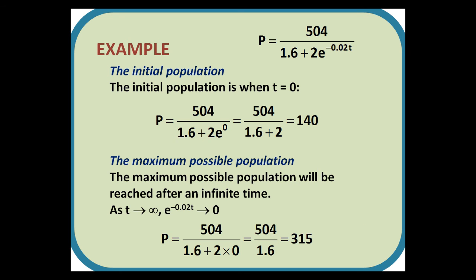The initial population is when t = 0. Substituting t = 0 gives P = 504/(1.6 + 2e^0). Since anything to the power of 0 equals 1, this is the same as 504/(1.6 + 2), which is 140.